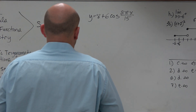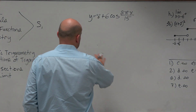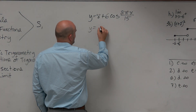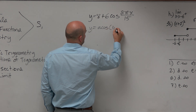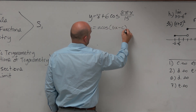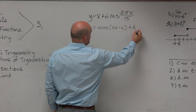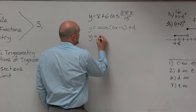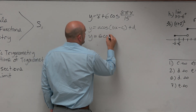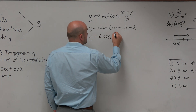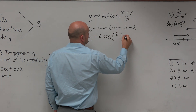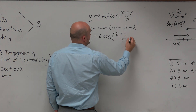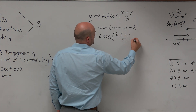We're asking for the period. This isn't in our general form: y equals a times cosine of bx minus c plus d. So let's go ahead and just rewrite it. y is equal to 6 cosine of 2 pi x over 15 plus 8.